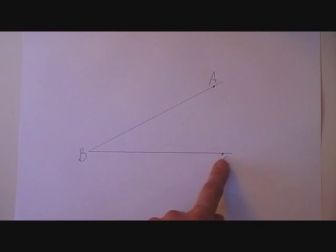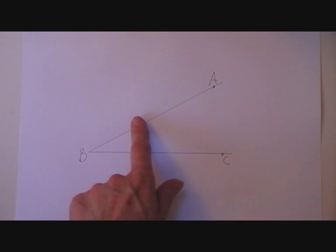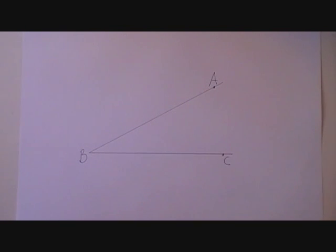This is the angle ABC. I am going to draw the bisector of the angle ABC. That is a line that will cut the angle ABC into two equal parts.